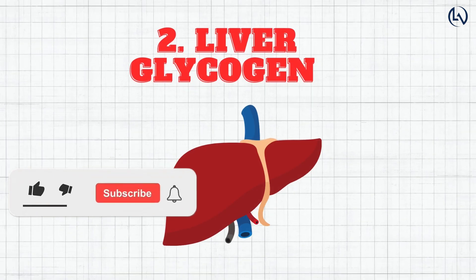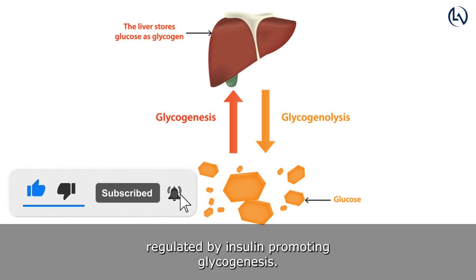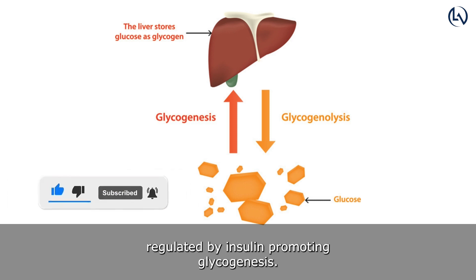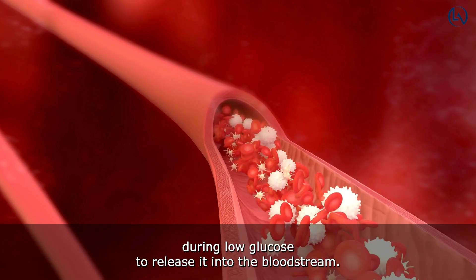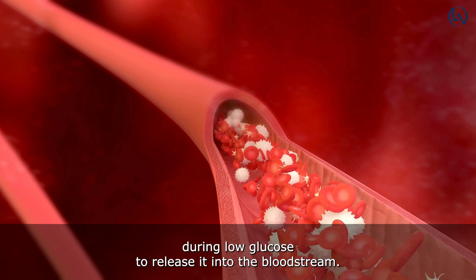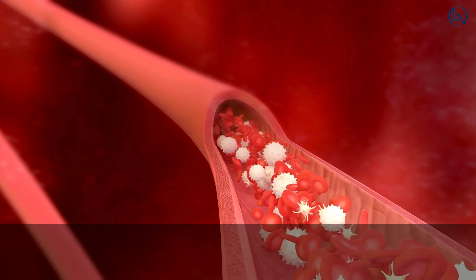Liver Glycogen serves as a glucose reservoir, regulated by insulin — promoting glycogenesis when glucose is abundant — and glucagon triggering glycogenolysis during low glucose to release it into the bloodstream.